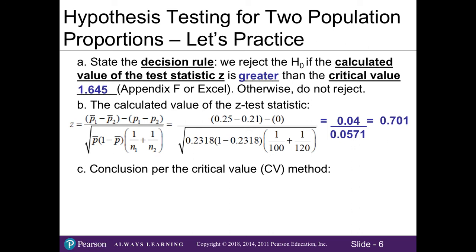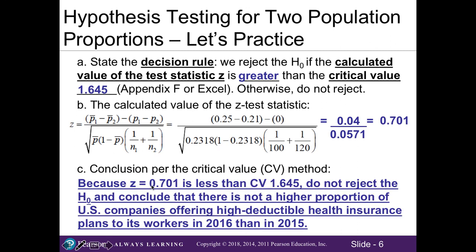Comparing part B to our decision rule in part A: since our Z test statistic of 0.701 is less than our critical value of 1.645, we do not reject the null — we are not in the rejection region. We can conclude that there is not a higher proportion of U.S. companies offering high-deductible health insurance plans to workers in 2016 than in 2015. If you have any questions, just let me know.